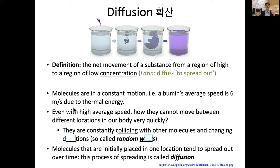Think about how fast that is — a tiny albumin molecule moving 6 meters, almost the size of a room, in one second. But we never think of albumin molecules in our blood moving between different locations in our body that quickly. That's because they are inside blood vessels and constantly colliding with other molecules.